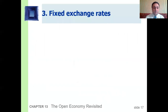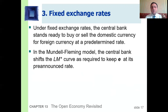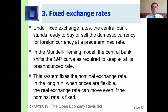Under fixed exchange rates, the central bank stands ready to buy or sell the domestic currency for foreign currency at a predetermined rate. In the Mundell-Fleming model, the central bank shifts the LM curve as required to keep the nominal exchange rate at its pre-announced rate. This system fixes the nominal exchange rate; in the long run, when prices are flexible, the real exchange rate can move even if the nominal rate is fixed.